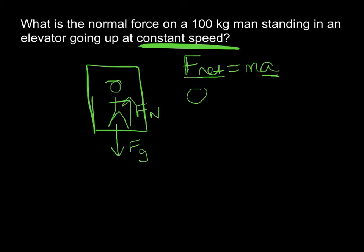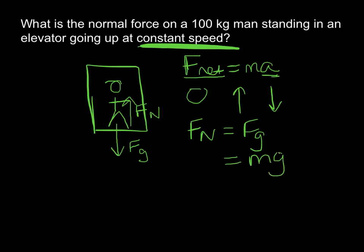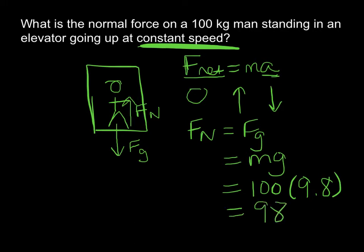So if we have no acceleration, then our net force is also zero. When our net force is zero, that tells us our up forces cancel out our down forces and they are equal. So in this case, our normal force is going to equal our gravitational force. We calculate the gravitational force as mass times gravity — that's the weight of the guy — so it's 100 times 9.8, and our normal force is 980 newtons.